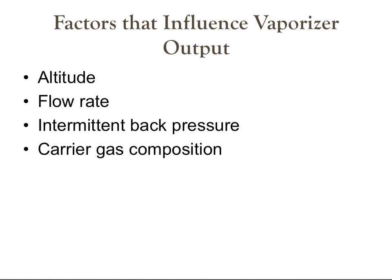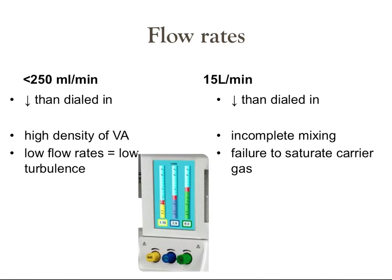There are multiple factors that influence vaporizer output, including altitude, flow rate, intermittent back pressure, and carrier gas composition. Low flow rates, defined as less than 250 mL per minute, decrease the amount of output compared to what you have dialed in.